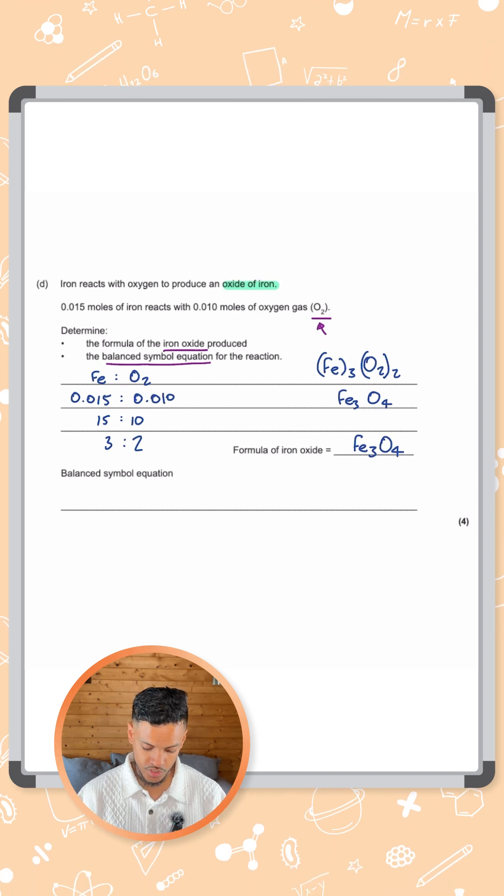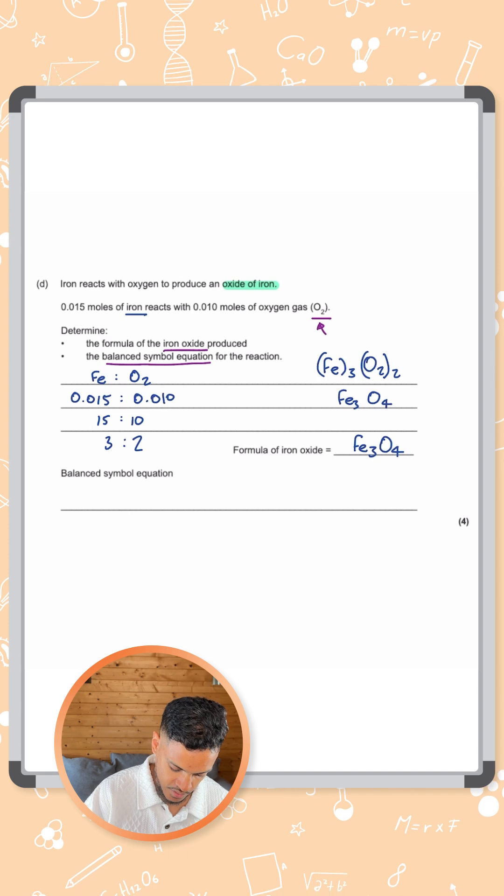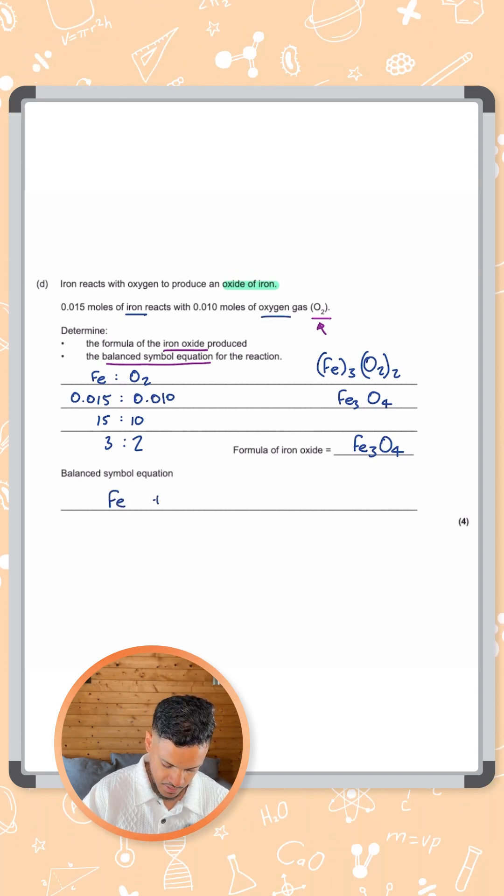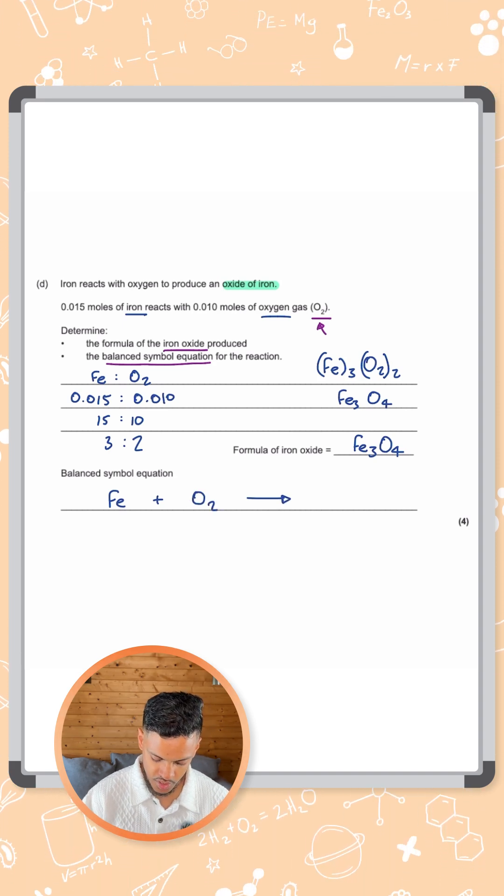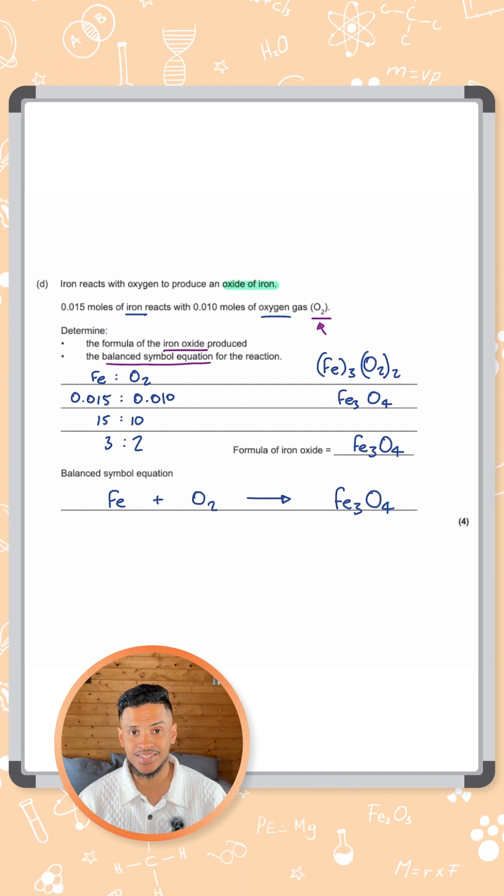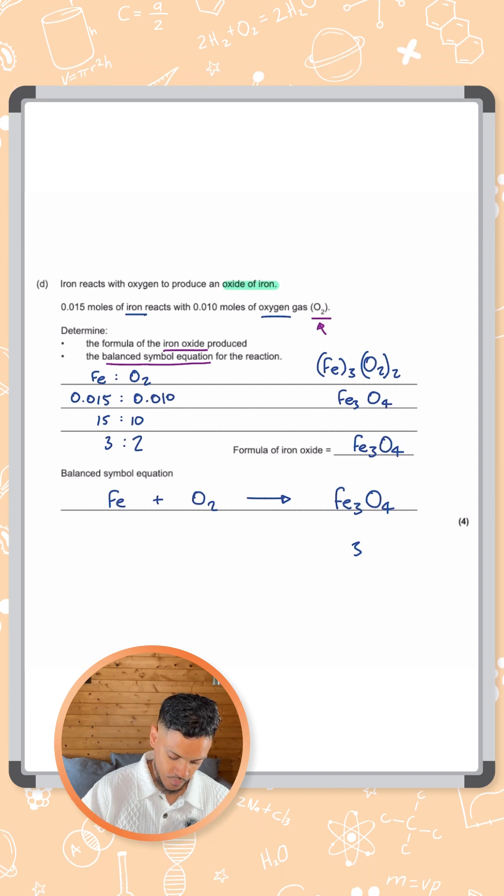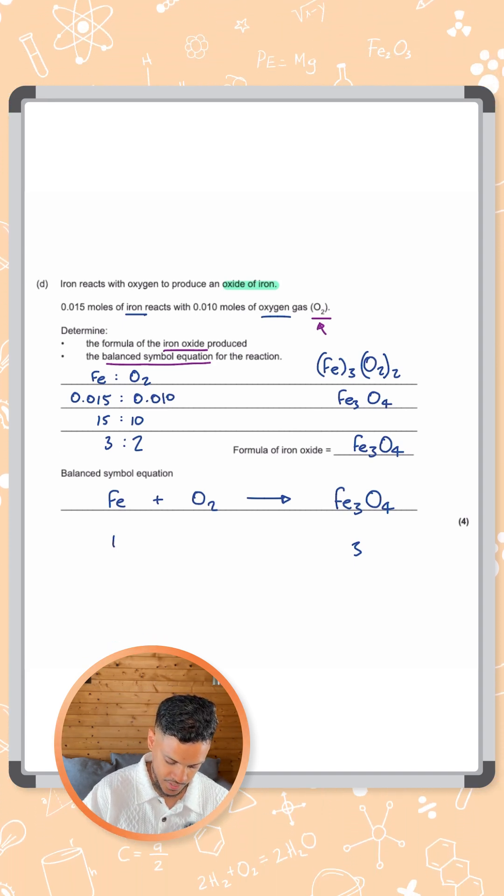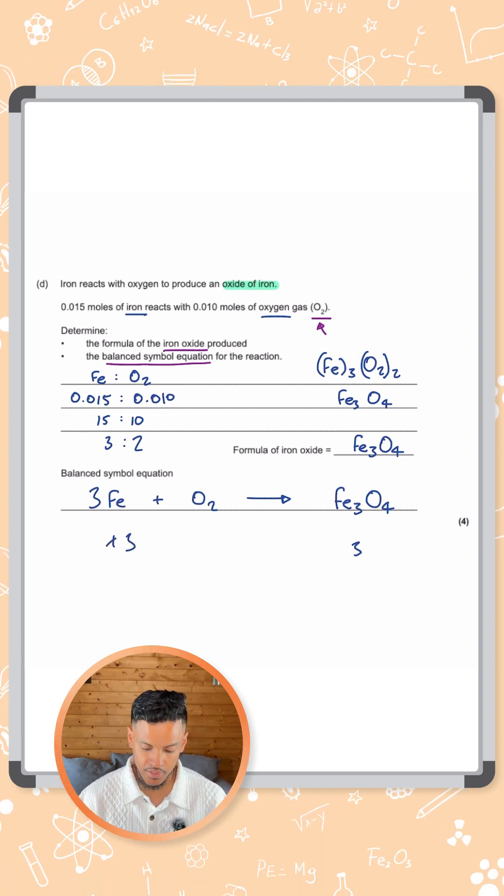What we can do is write the balanced symbol equation. Iron reacts with oxygen, so that's our reactants. Fe plus O2 goes to form the product we just wrote down, Fe3O4. We need to balance this. We've got three Fe's on the right and one on the left, so that's not balanced. We can put a 3 in front of the Fe to make them both balanced.